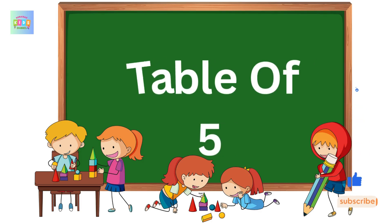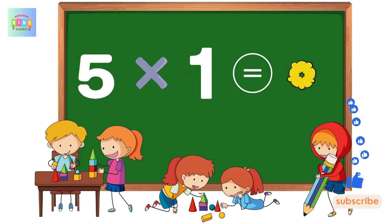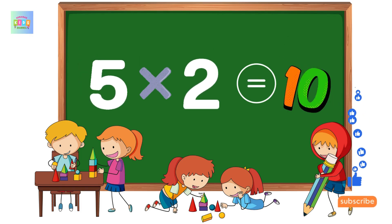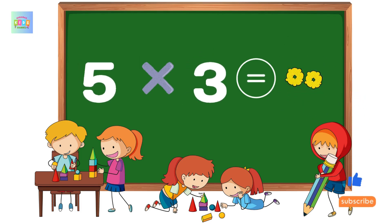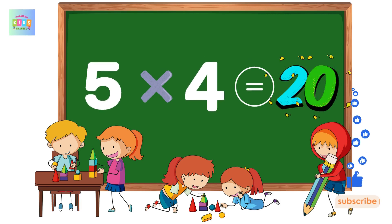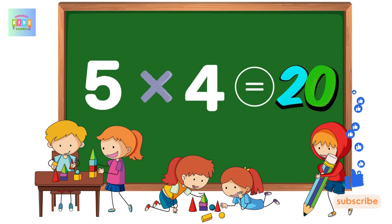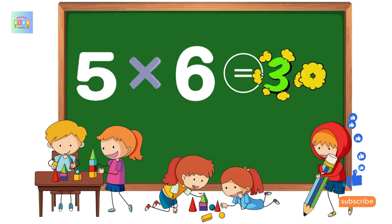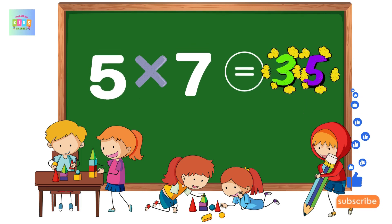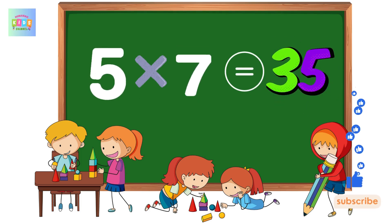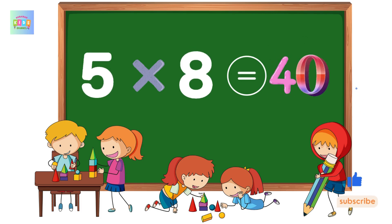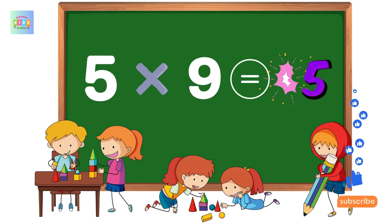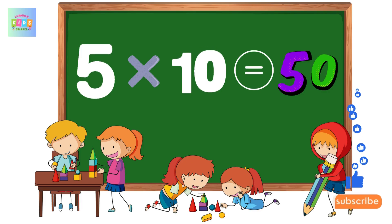Table of 5. 5 1s are 5, 5 2s are 10, 5 3s are 15, 5 4s are 20, 5 5s are 25, 5 6s are 30, 5 7s are 35, 5 8s are 40, 5 9s are 45, 5 10s are 50.